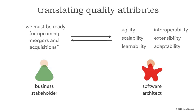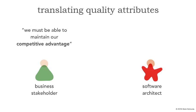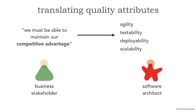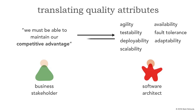We can take all of these and translate back to the business user that we are focusing on mergers and acquisitions and preparing our systems for those — you can see that bi-directional relationship. Let's do one more: our business stakeholders say we have to maintain competitive advantage. For us, that's again agility — the ability to respond quickly to change — combined with high levels of testability and deployability. Scalability comes into play here because the more you compete, the more customers you generally have. Availability is key to maintaining competitive advantage, our systems being up and available, and also fault tolerance. Adaptability — to be able to adapt to changes in the market — maintains a competitive advantage, and we can translate these back to the business stakeholder.